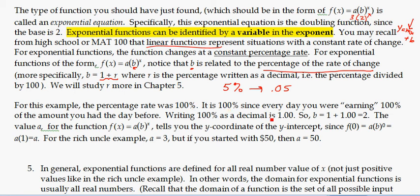If we want to write 100% as a decimal, it would just be 1, 1.0. So our base in the rich uncle example was 1 plus 1 or 2. So that was our doubling function.